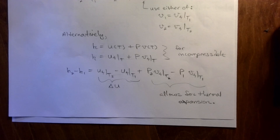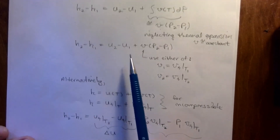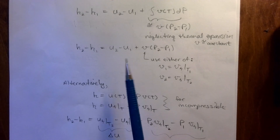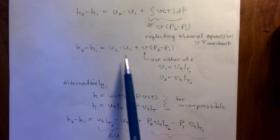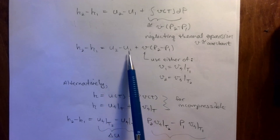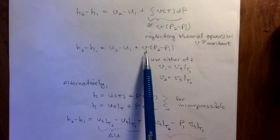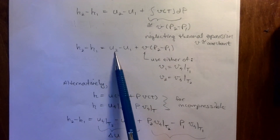If you don't know one of the temperatures — say you're using this equation to solve for T2 — if you know T1 you can evaluate U1 and V1, and then U2 gives you T2.